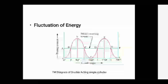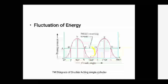When the crank moves from Q to R, the energy QCDR is extracted from the engine. The remaining energy CCD is not available, so it is again extracted from the flywheel, and the speed of the flywheel decreases.